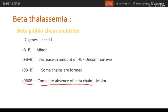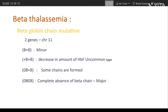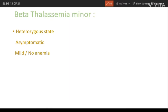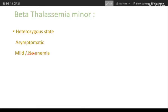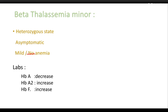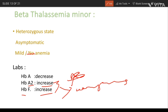If both genes are completely mutated, there is complete absence of beta chain production — this is called beta thalassemia major. Beta thalassemia minor is a heterozygous state: it is asymptomatic with mild anemia. Lab findings show HbA decreases, while HbA2 and HbF are increased to compensate for the beta deficiency.